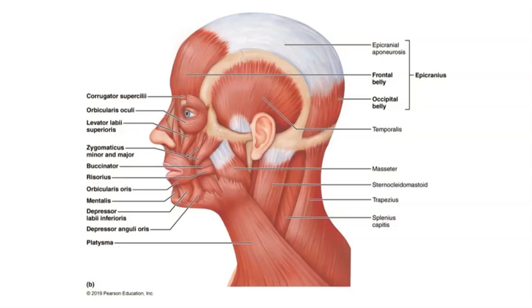From our muscle anatomy lab list, there are six muscles specifically of the head and neck that we will focus on.